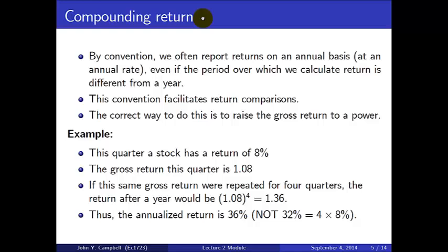The next topic is compounding return. By convention we often report returns on an annual basis, even if the period over which we initially calculate the return is different from a year. This helps us compare returns legitimately in a common time interval. To annualize returns correctly, you raise the gross return to a power. For example, if a stock has a quarterly return of 8%, the gross return is 1.08, and over four quarters that becomes 1.08 to the power 4, which equals 1.36.